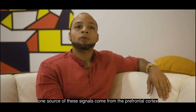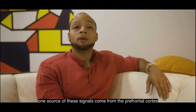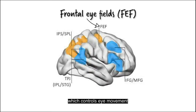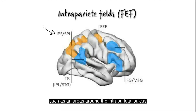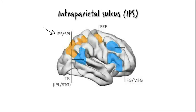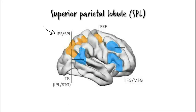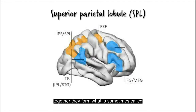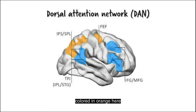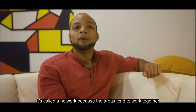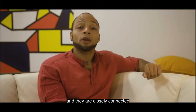One source of these signals comes from the perifrontal cortex, in an area called the frontal eye fields, FEF, which controls eye movement. There are also regions in the parietal cortex that are involved, such as an area around the interparietal sulcus, IPS, or the superior parietal lobule, SPL. Together they form what is sometimes called the dorsal attention network, DAN, colored in orange here. It's called a network because the areas tend to work together, and they are closely connected.